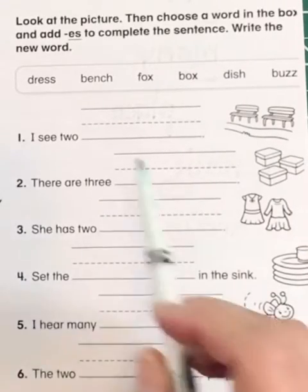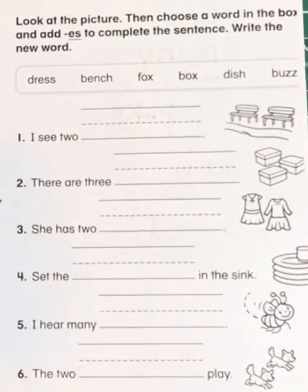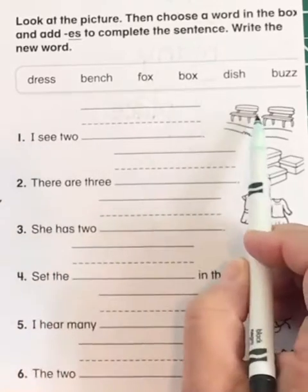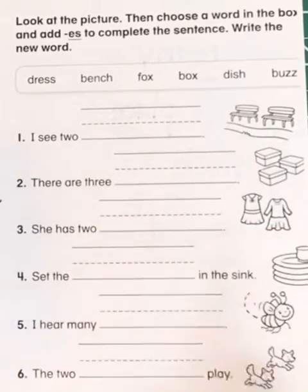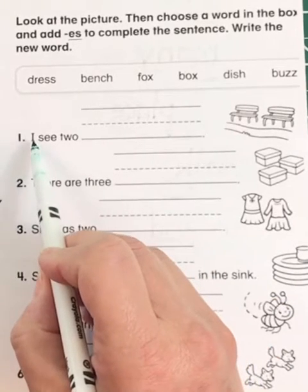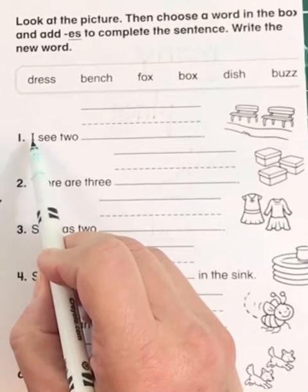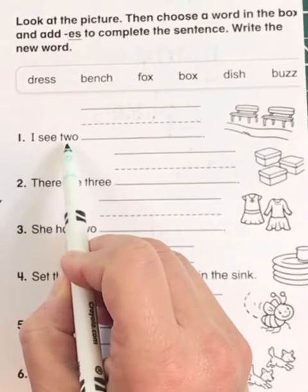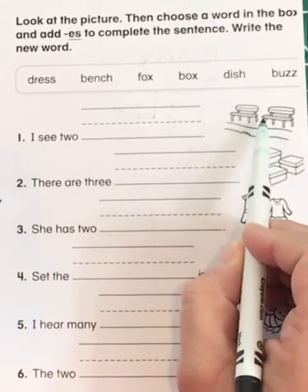So we have to find the base word, look at the picture that would match the word, and then make it mean more than one. So the first sentence — what do we see in the picture? Yes, we see benches.